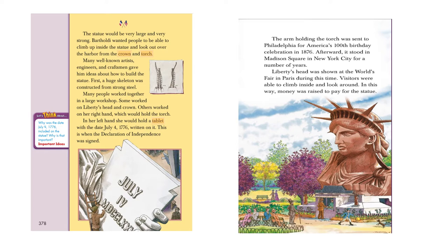Many well-known artists, engineers, and craftsmen gave ideas about building the statue in the best way. First, they built a huge skeleton. Like in our bodies, we have a skeleton from bones, but here it is made of steel to make the statue strong and able to carry people inside it. Many people worked together in a large workshop — some on Liberty's head and crown, others on her right hand which would hold the torch.